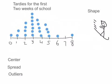So that is the center. So what we're really kind of saying is half the kids have 3 or more tardies, and half the kids have 3 or less tardies in our sample.